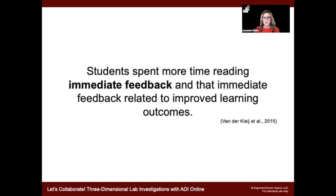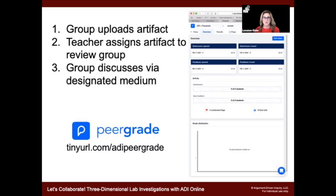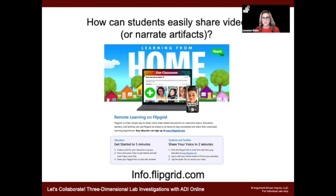The great thing is you can have students interact with one another for immediate feedback, which also helps them with higher levels of learning — assessing and evaluating information. Another free resource we really like is PeerGrade. You can set up your classes, groups can upload their artifact — a whiteboard, lab report, whatever — and the teacher can assign that artifact to a group to review. The owners of the artifact can then discuss via a designated medium. If this isn't live, Flipgrid is a great resource — students can make super simple videos, share their artifacts, and annotate in a short video. The reviewing group can give them feedback by recording a short video, asking questions, asking for clarification. We've had teachers in the classroom use this with really good success.